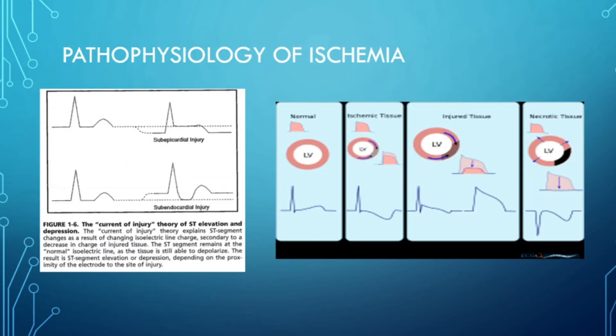Injured cells do not act the same way as healthy cells, so why would damaged myocytes be any different? When myocytes are damaged, there's a cascade of events that cause EKG changes. One of these events deals with electrical changes due to decreased sodium-potassium pump activity, causing a decrease in diastolic transmembrane potential, which in turn delays phase 3 repolarization.